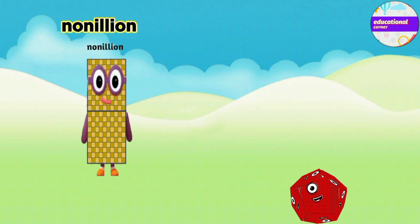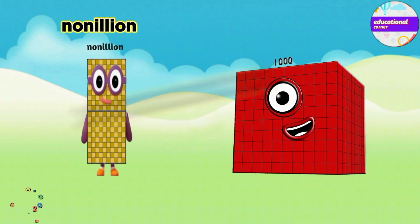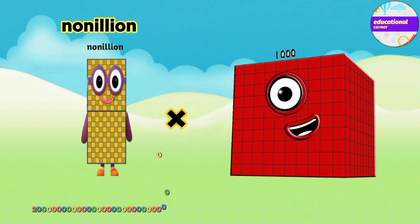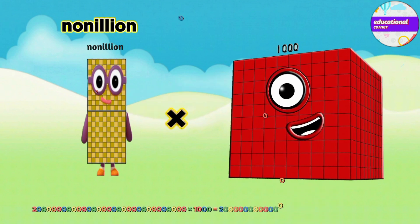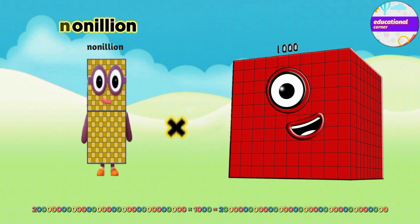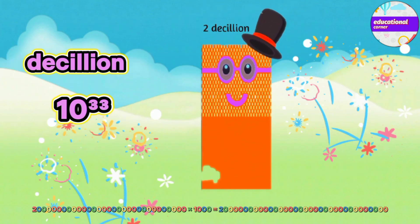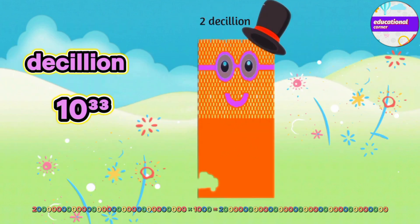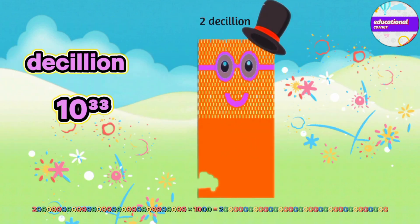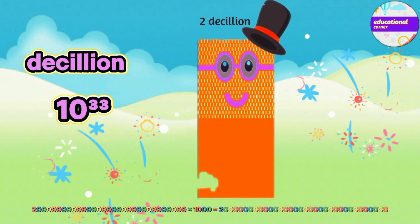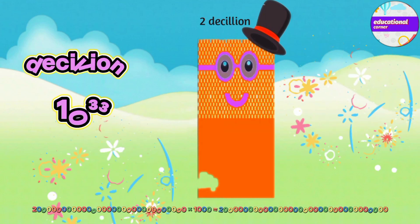Two nonillion multiplied by thousand equals two decillion.